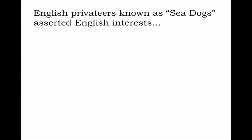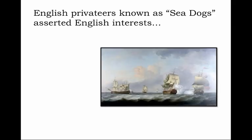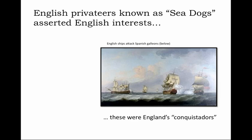Much of the actual work of enforcing English will, even before the arrival of initial colonial settlers, was left to the so-called privateers — sea captains who worked ostensibly as private merchant shippers but who really carried out the interests of the English crown. They were also known as sea dogs for their combative, tenacious ways, particularly their attacks on Spanish galleons. You see here an image of the English sea dogs and their ships attacking the Spanish galleons, often laden with gold and treasures from America. These were England's conquistadors.